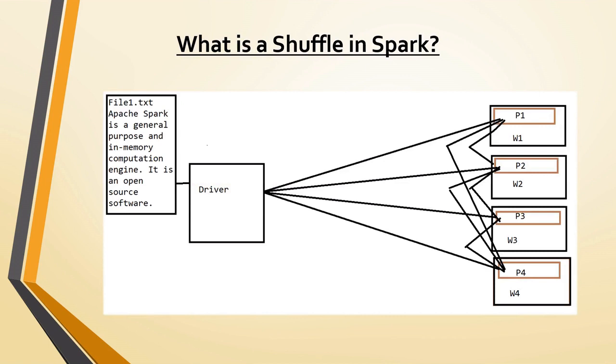Shuffling means redistributing the data across the partitions — that is, copying the data across executors — which makes shuffle a complex and costly operation.